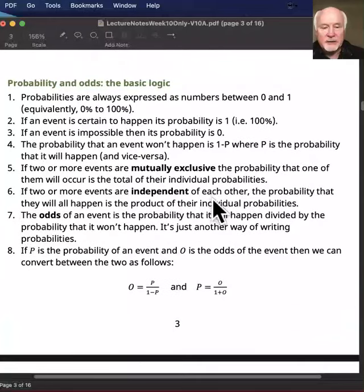So let's just go through a few basic things here. Probabilities are technically always numbers between zero and one. And that's equivalent to being numbers between zero percent and a hundred percent. So a hundred percent is the same thing as one, and 50% is the same thing as 0.5 and so on.